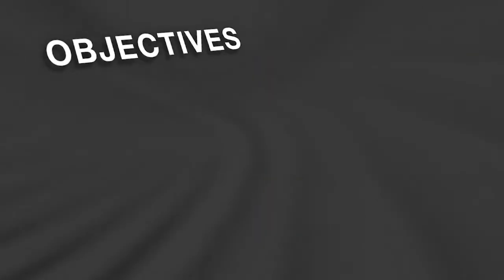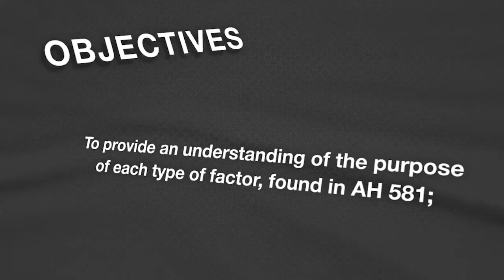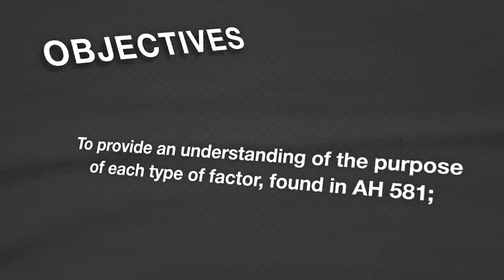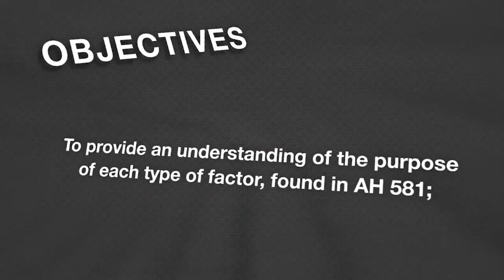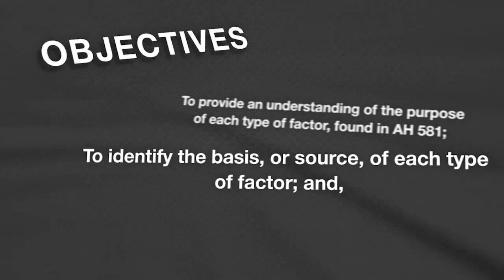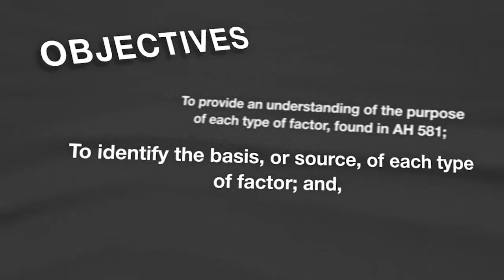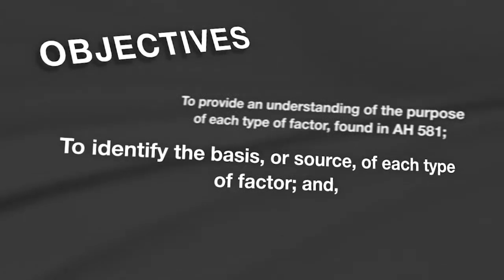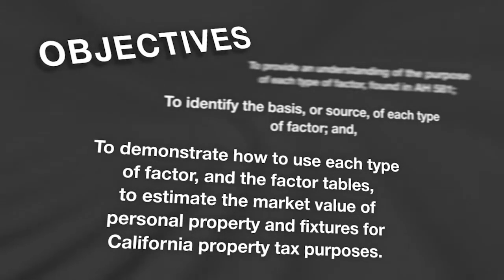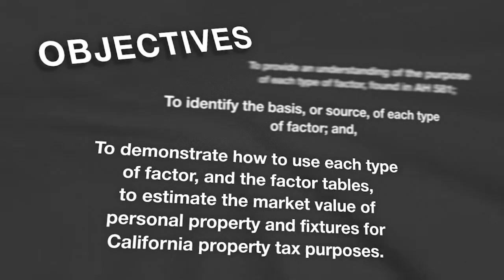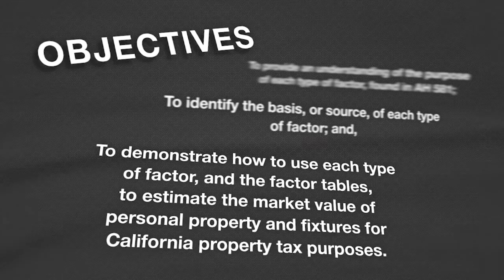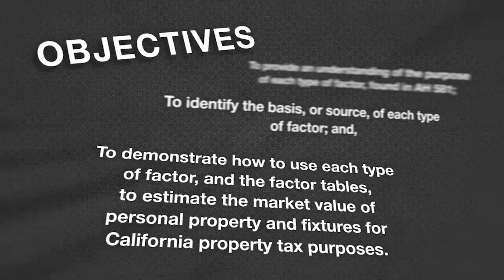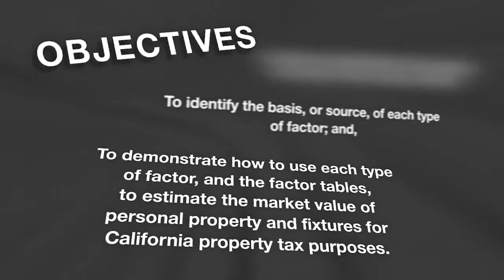The objectives of this learning session are to provide an understanding of the purpose of each type of factor found in Assessor's Handbook, Section 581, to identify the basis or source of each type of factor, and to demonstrate how to use each type of factor and the factor tables to estimate the market value of personal property and fixtures for California property tax purposes.